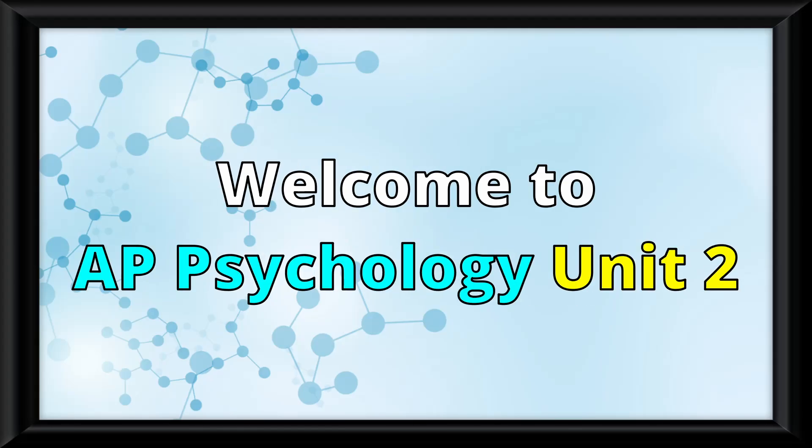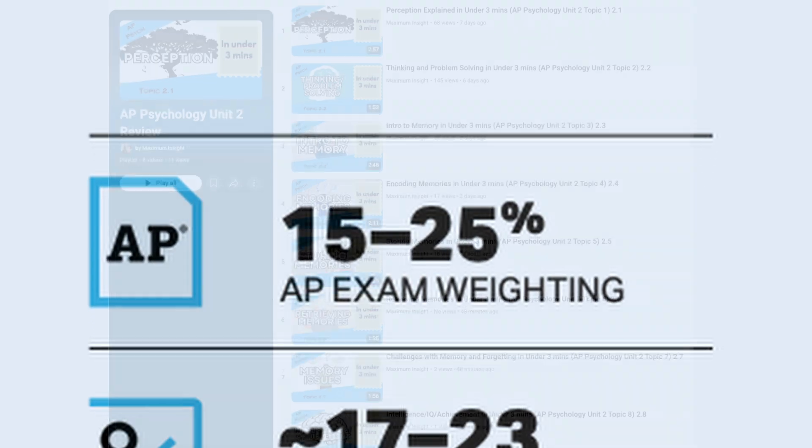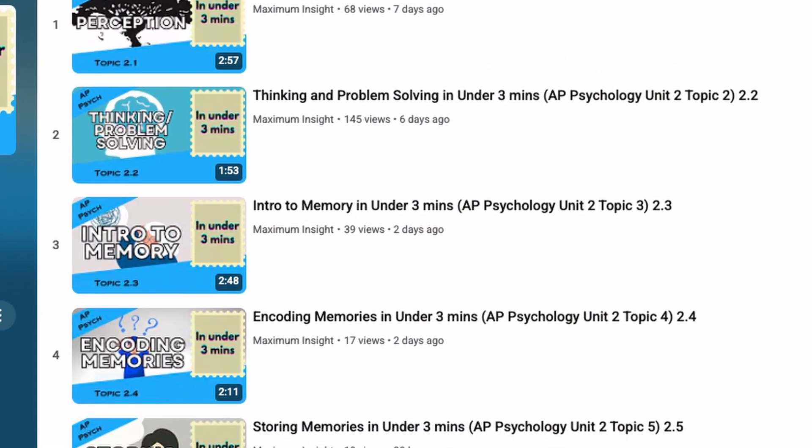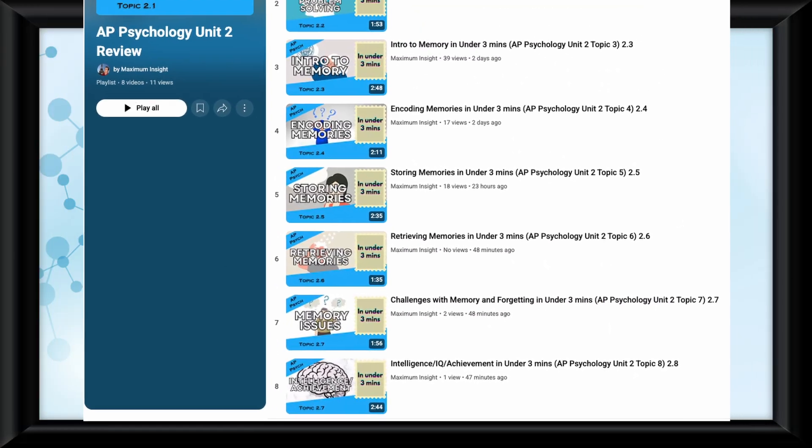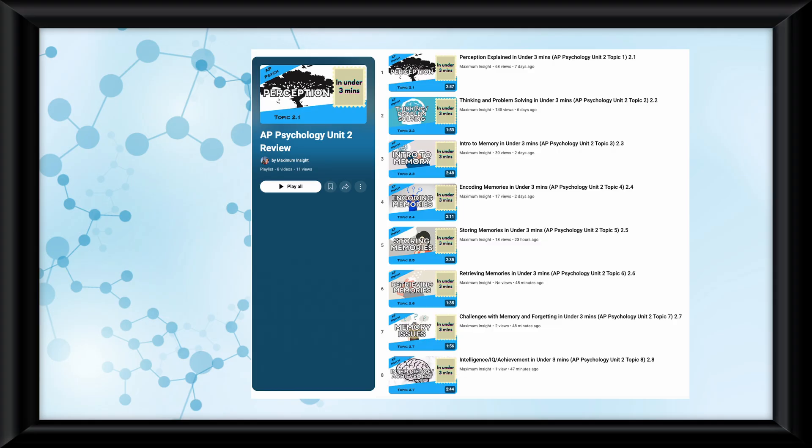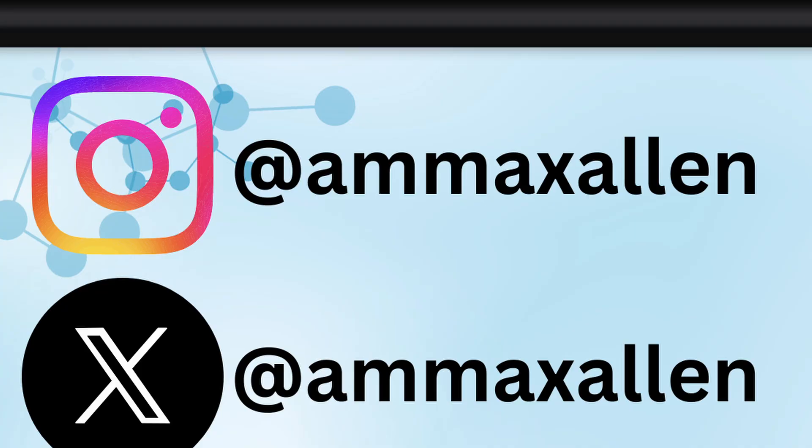Welcome to AP Psychology Unit 2. This unit covers mental processes and a lot about memory, and it's worth quite a bit on your AP exam. This video will be a clipped together video of all my Unit 2 topic review videos without the AP style questions at the end of each video. If you want to attempt AP style questions associated with each topic of Unit 2, my full Unit 2 playlist will be in the description. A quick reminder to follow the socials, especially the Instagram. Alright, let's just get into Unit 2.